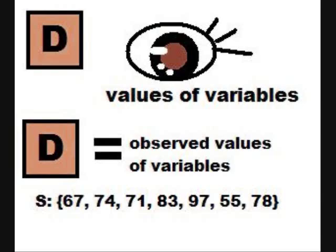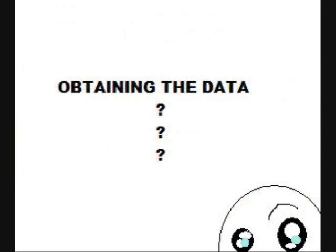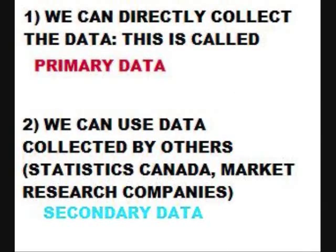Now, how do we obtain the data? There are two ways. We can directly collect the data ourselves — this is called primary data, the first form of data collected. The second way is we can use data collected by others, for example Statistics Canada or market research companies. This is called secondary data. That's really all it is — and they branch off from there.